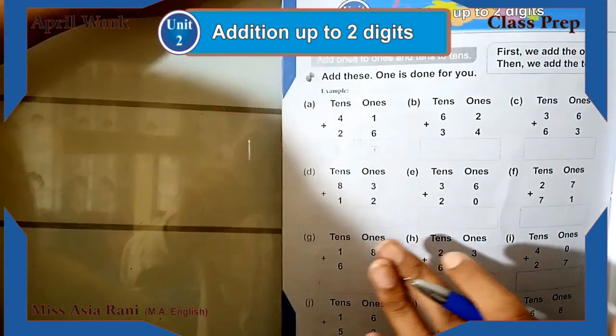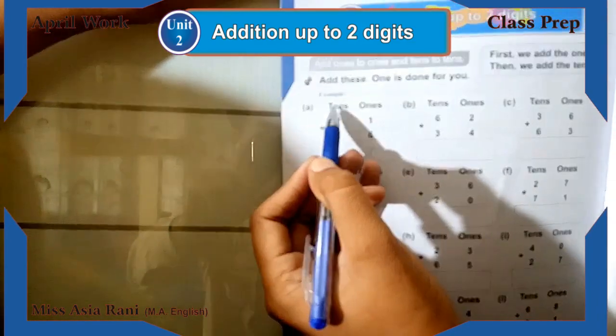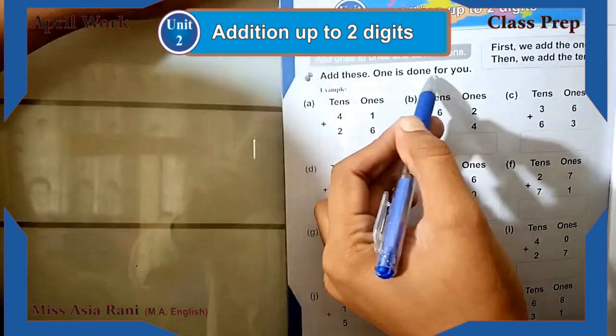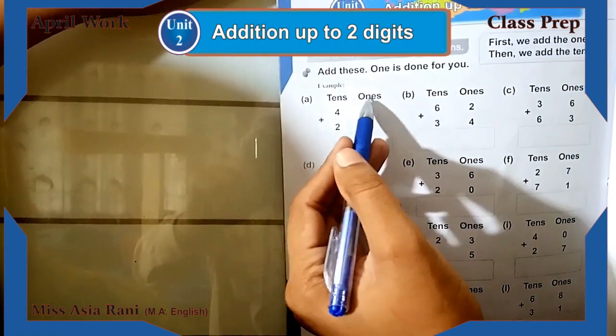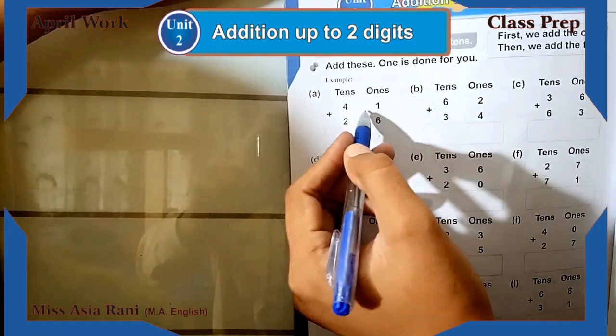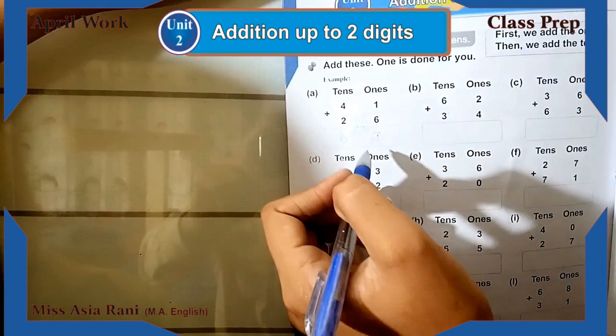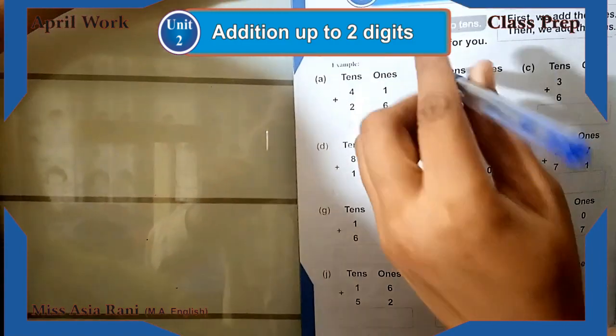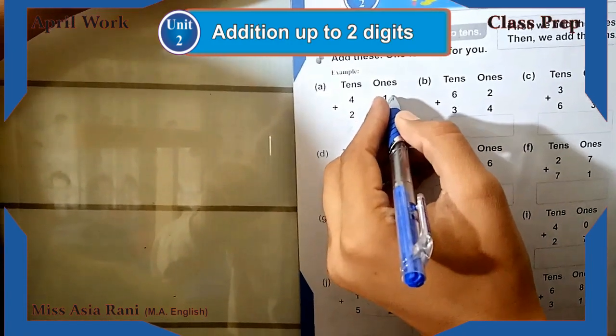First you study single concepts, but now we will study tens. One is done for you. Tens and ones: we have to add 1 and 6 in the ones place, and 4 and 2 in the tens place. So we have to solve this. On the right side here, we will start this question.